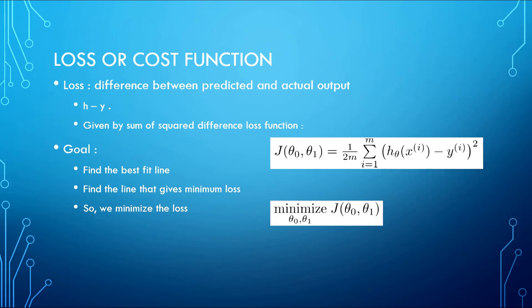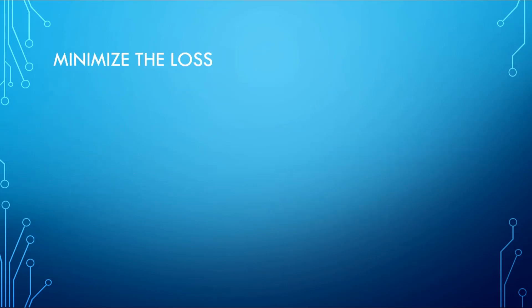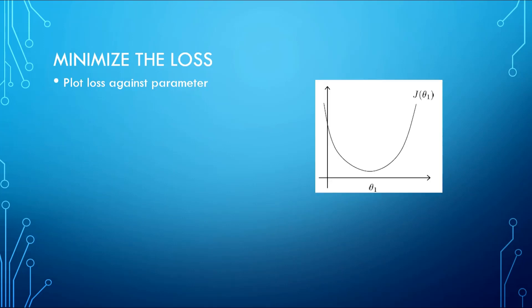How do we minimize this? We minimize this with the help of an algorithm named gradient descent. The point about minimizing the loss — we are going to understand this with the help of a visualization in which we plot loss against our parameters.